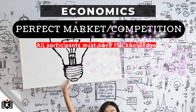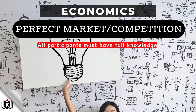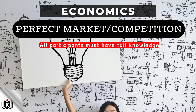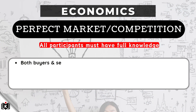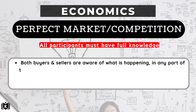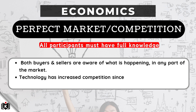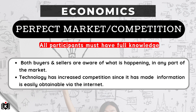All participants in a perfect market have full knowledge of market conditions, meaning both buyers and sellers are aware of what is happening in any part of the market. Technology has increased competition, as information is easily obtained via the internet.